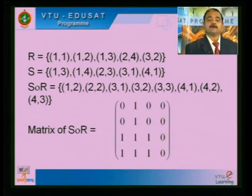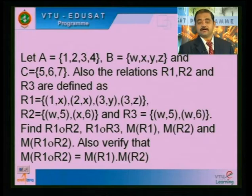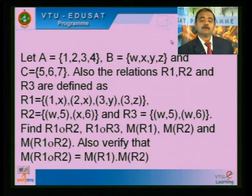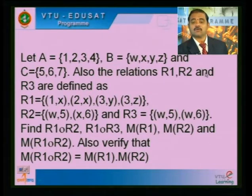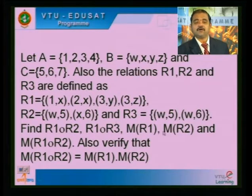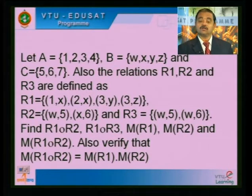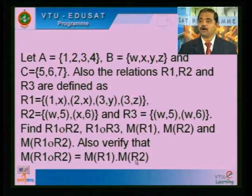Compute R composite S and S composite R and write the matrices — this is a very important university question, repeated 2-3 times in the exam. The question gives A = {1,2,3,4}, B, and C, with relations R1, R2, R3 defined. Find the compositions R1 composite R2, R1 composite R3, matrix of R1, matrix of R2, and matrix of R1 composite R2. We also verify that M(R1 composite R2) equals M(R1) times M(R2).